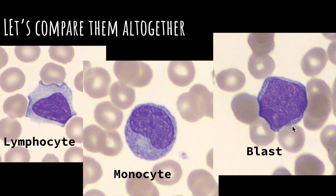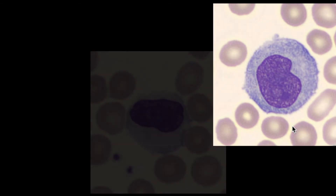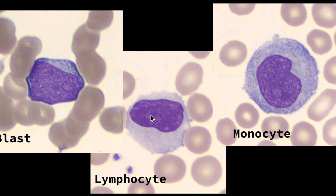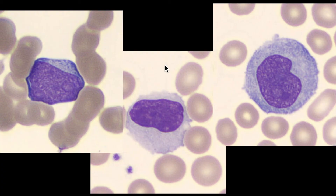This next slide is pretty straightforward too — you can pick up right away which one is which. Which one has the darkest nucleus? It's this one, so that must be the lymphocyte. This one is the blast, and this one is the mono. You should be able to know your morphologies now and pick up which is which, though it's not always this easy — there's always going to be gray area.